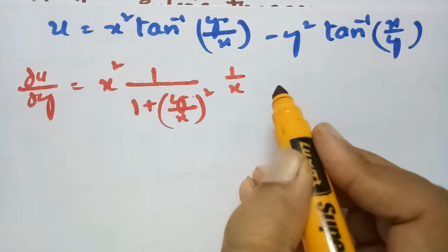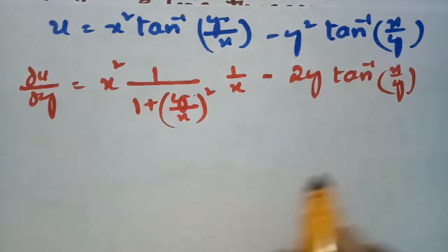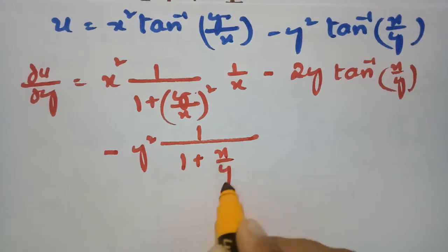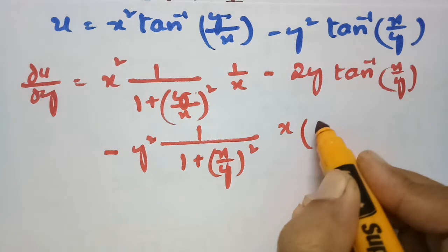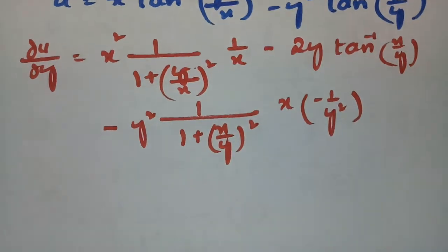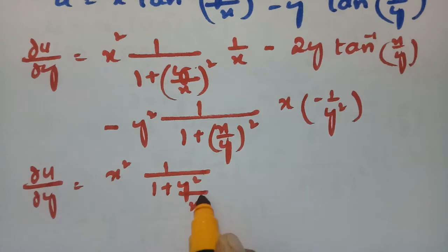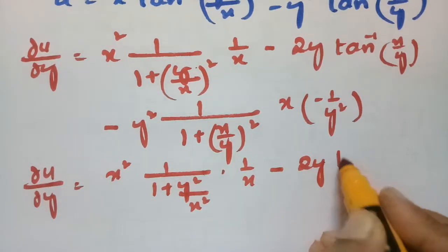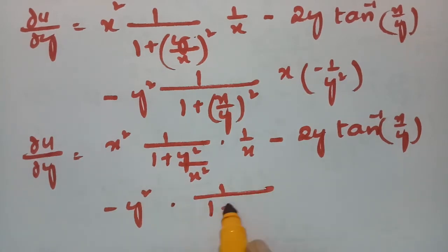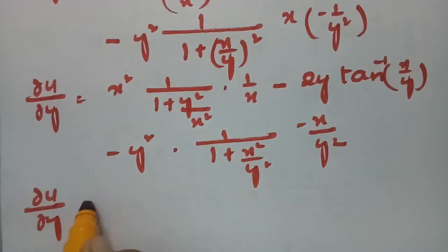Applying the UV rule: for y square the derivative is 2y, leaving tan inverse of x by y. Then leaving y square and making a derivative with respect to y: derivative of tan inverse of x by y is 1 by 1 plus x by y whole square. x is constant, and derivative of x by y with respect to y is minus x by y square.